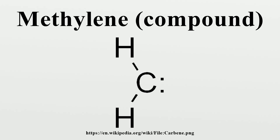Nomenclature: The trivial name carbene is the preferred IUPAC name. The systematic names methylidene and dihydrocarbene, valid IUPAC names, are constructed according to the substitutive and additive nomenclatures, respectively. Methylidene is viewed as methane with two hydrogen atoms removed. By default, this name pays no regard to the radicality of the methylene, although in a context where radicality is considered, it can also name the non-radical excited state, whereas the radical ground state with two unpaired electrons is named methanedial.